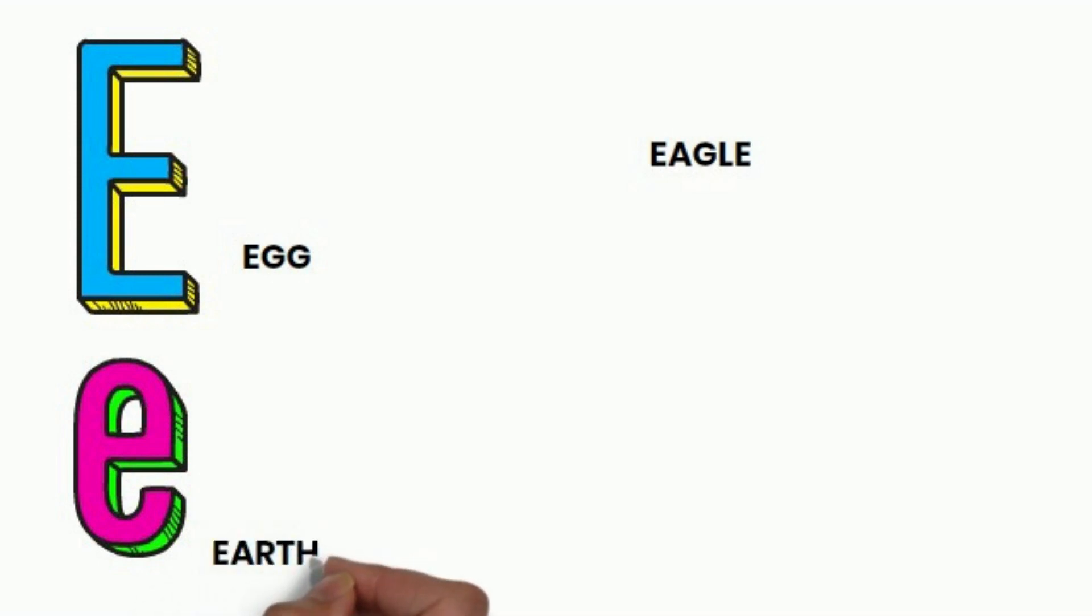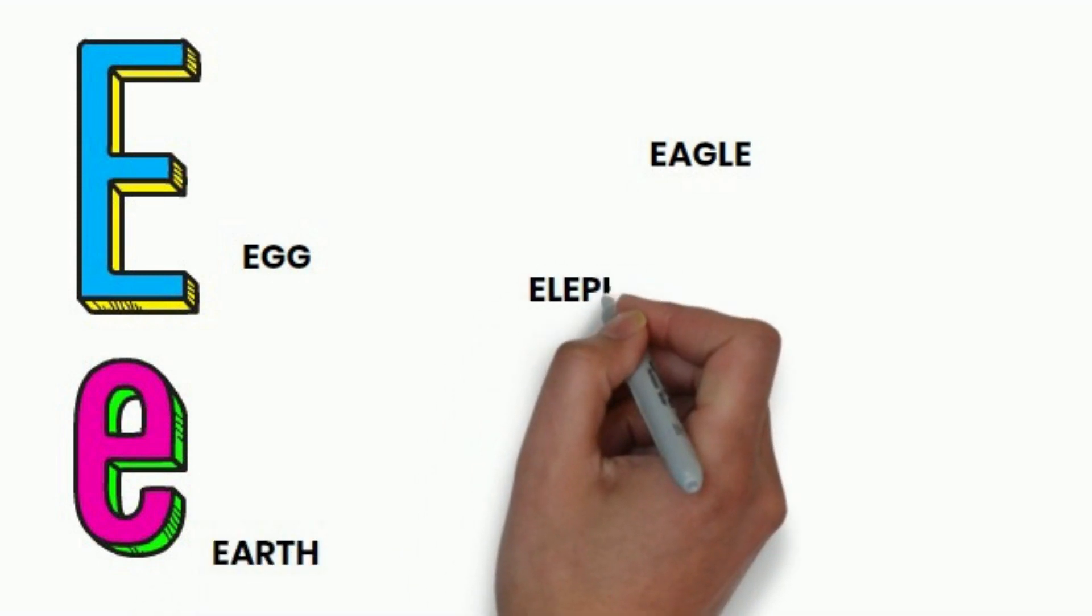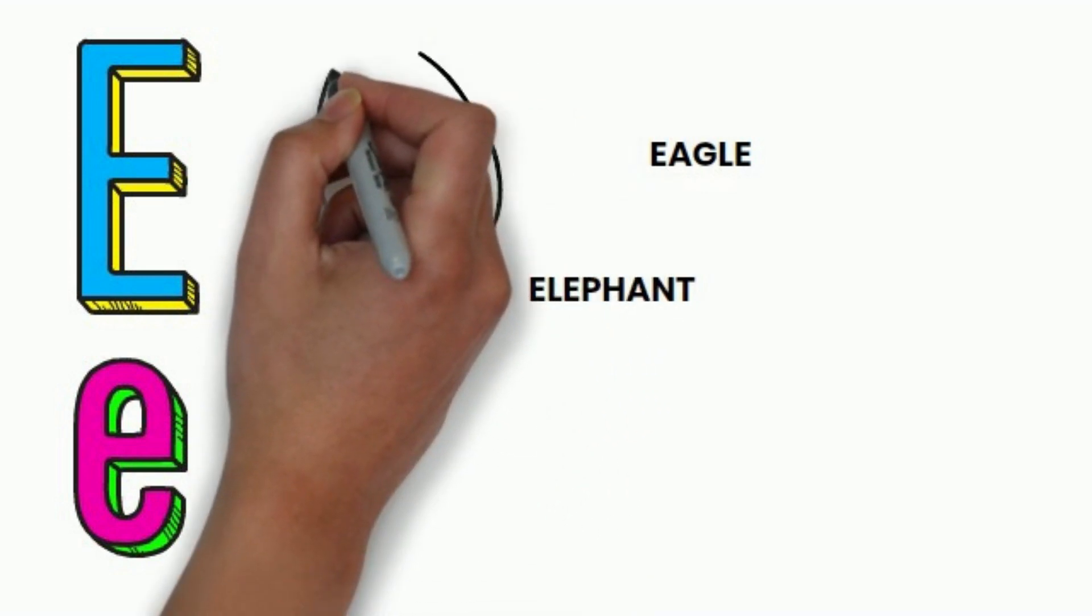E for Earth. E for Elephant. Let's draw an Egg.